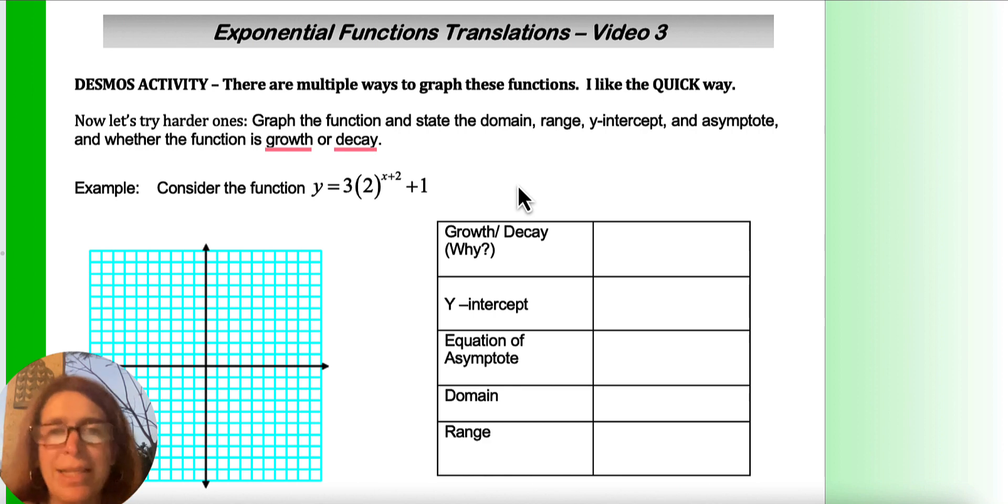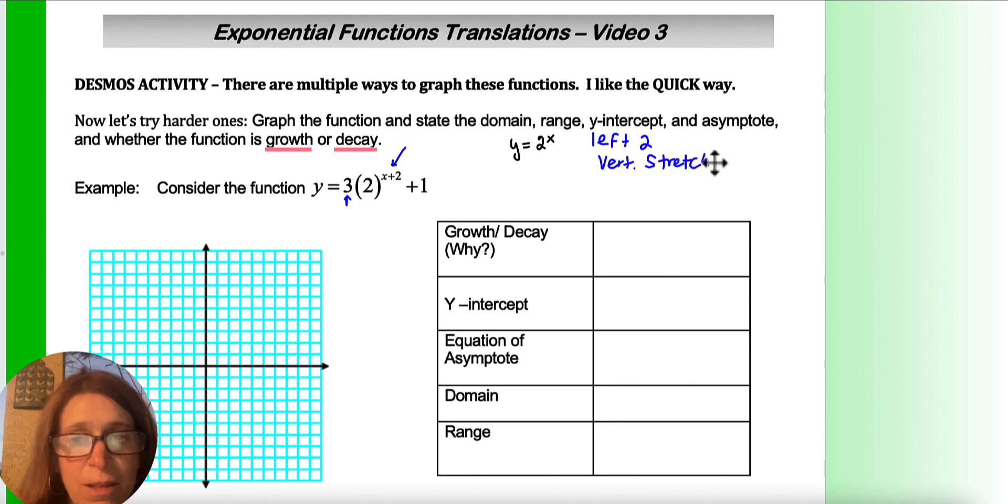So you need a b to have a parent, so y equals b to the x will always be the one that would be the parent, so in this case it would be like y equals 2 to the x. Based on that parent, this would be moving to the left 2, it would have a vertical stretch of 3, and it would be moving up 1. Now that up 1 is important because that's going to move my asymptote up 1.